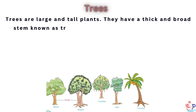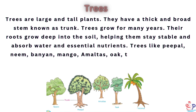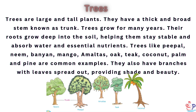Trees are large and tall plants. They have a thick and broad stem known as a trunk. Trees grow for many years. Their roots grow deep into the soil, helping them stay stable and absorb water and essential nutrients. Trees like peeple, neem, banyan, mango, amaltus, oak, teak, coconut, palm and pine are common examples. They also have branches with leaves spread out, providing shade and beauty.